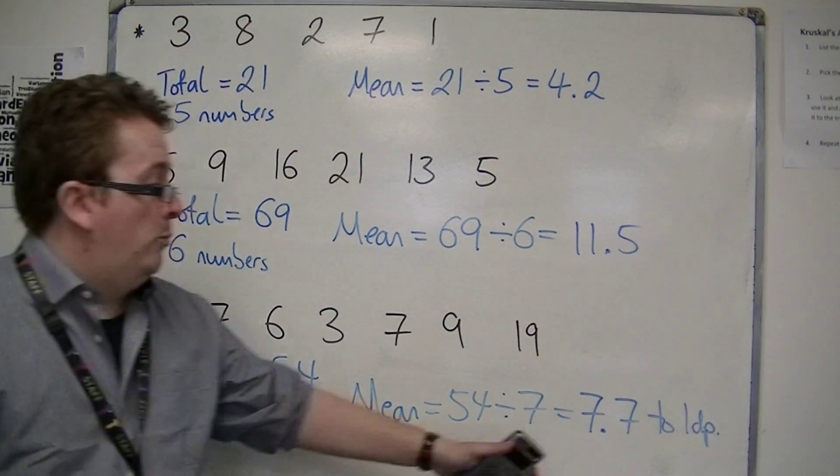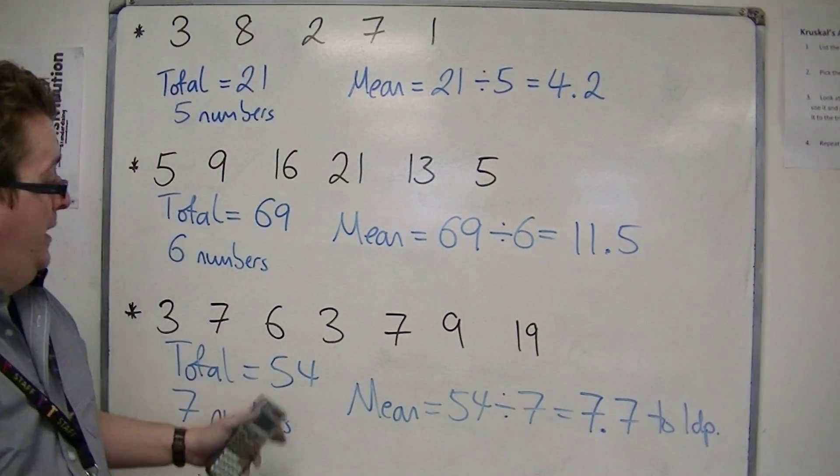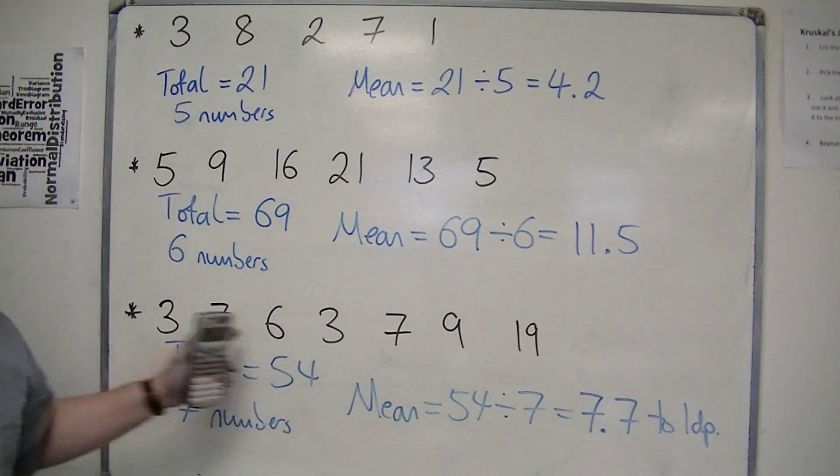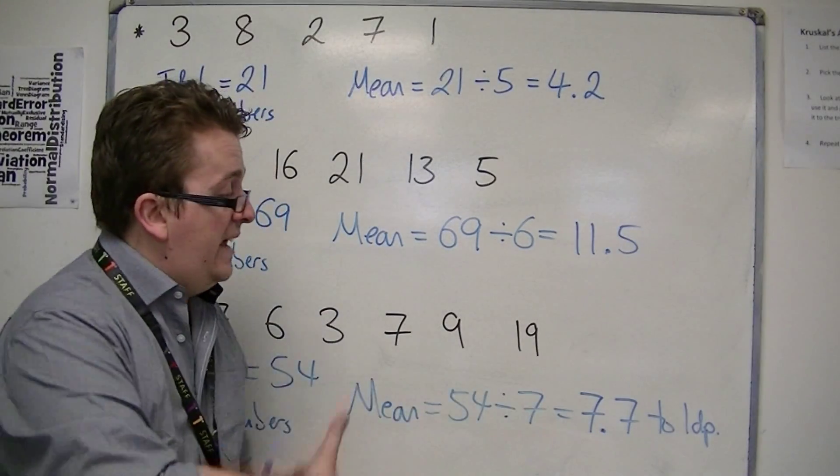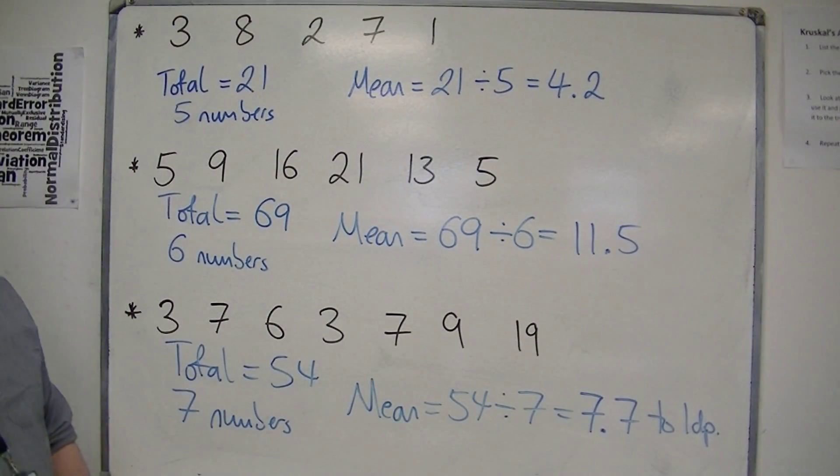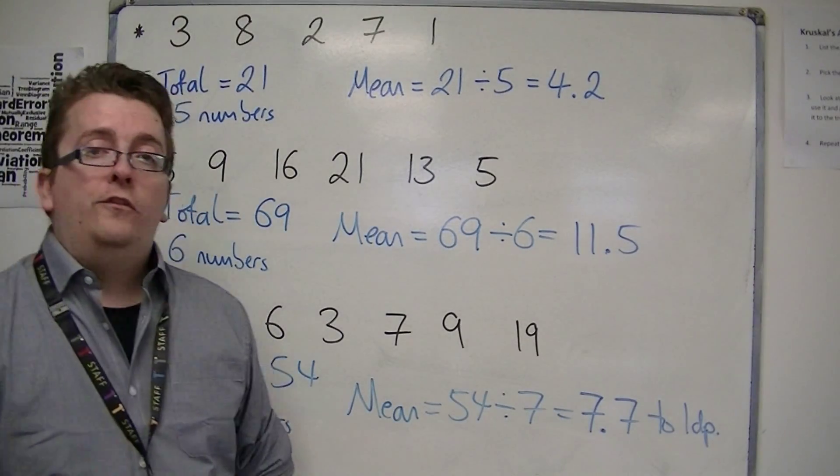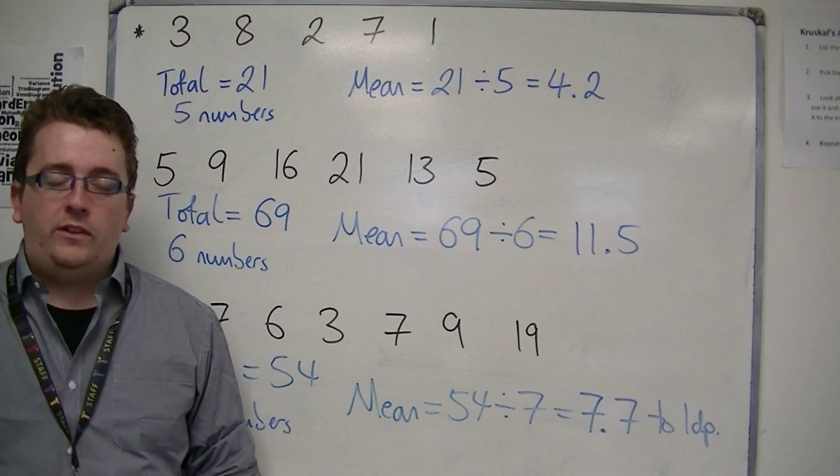So in this case, I would go to one decimal place, because all the numbers here are to the whole number. So the next set of accuracy will probably be best. So this is how we work out the mean for these three sets of data. Three examples there.